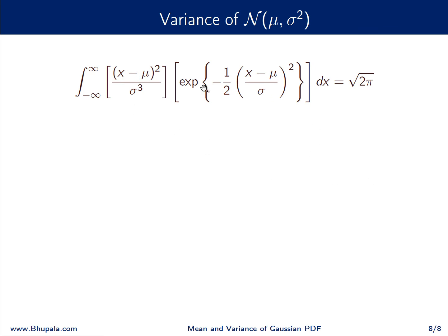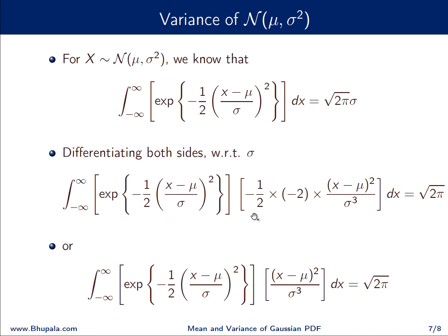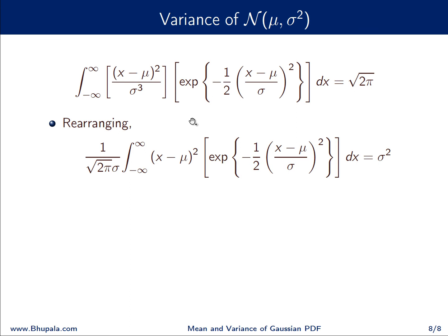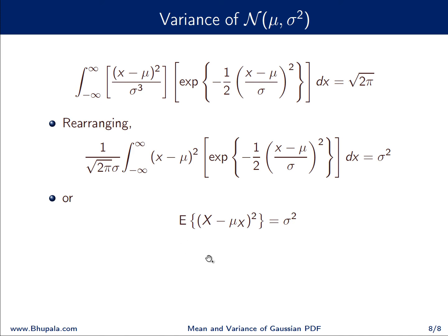Rearranging: we write σ³ = σ · σ² and bring (1/√(2π)) to the left side, attaching one σ to form (1/(√(2π) σ)). The remaining σ² moves to the right-hand side, giving: (1/(√(2π) σ)) × ∫_{−∞}^{∞} (x − μ)² · exp(−(x − μ)²/(2σ²)) dx = σ². The left-hand side is precisely E[(X − μ)²], i.e., the variance. Hence the variance of the Gaussian random variable is σ².